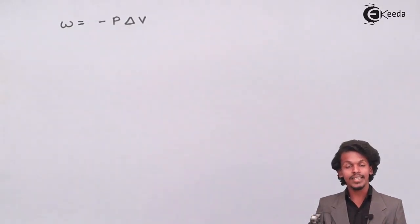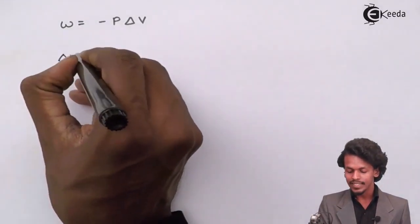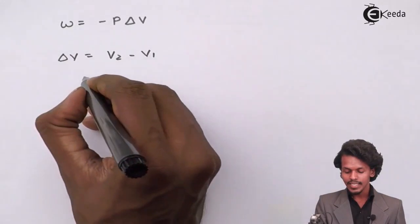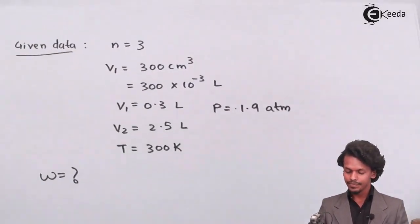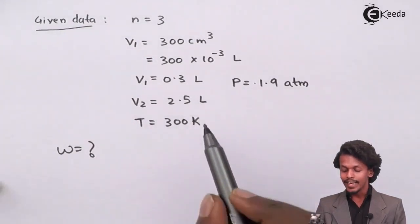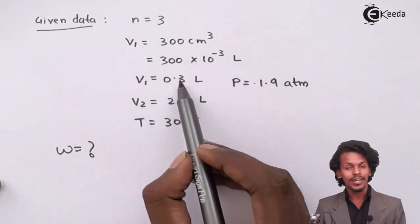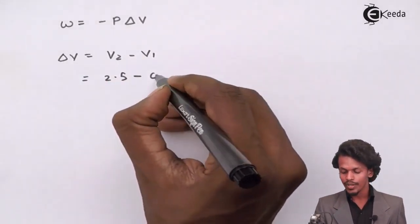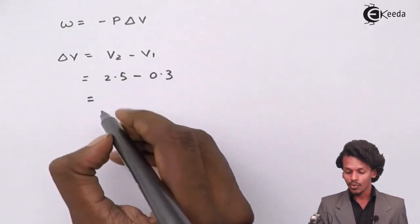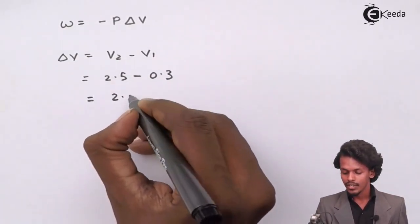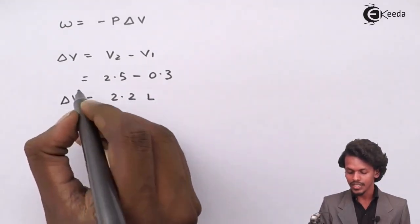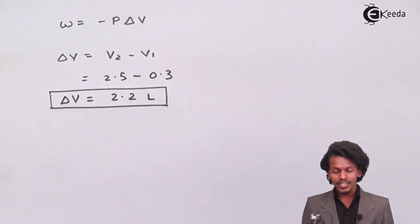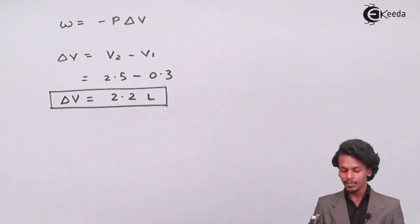Before calculating the work, we calculate ΔV = V2 − V1 = 2.5 liter − 0.3 liter = 2.2 liter.